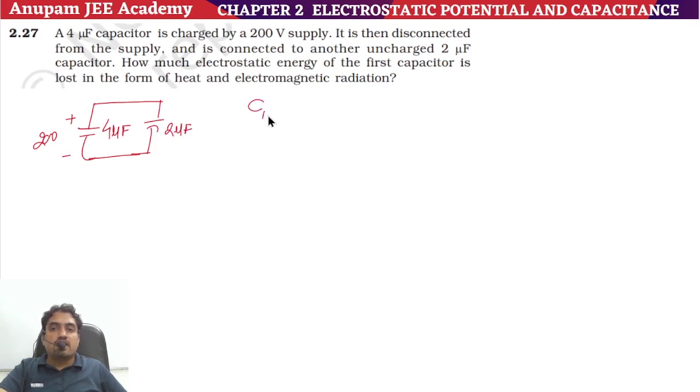So if we look here, C1 value is 4 microfarad and C2 value is 2 microfarad. If we talk about V1, then we have 200 volts given. And if we talk about V2, it is uncharged, so it is 0 volts.